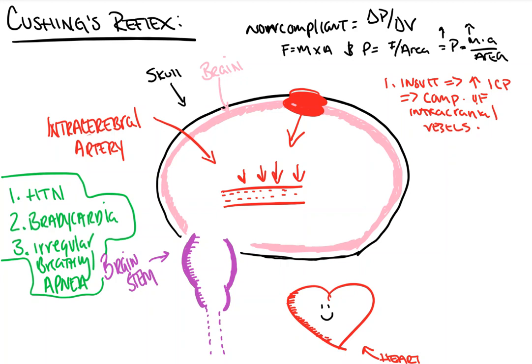Our brain doesn't like that because it needs oxygen, and oxygen comes with the blood. This results in stage one of the Cushing reflex: our sympathetic system kicks in to increase cardiac output. Remember, cardiac output equals heart rate times stroke volume. Our body says we need to get more blood to the brain, so we increase cardiac output via the sympathetic nervous system — speeding up heart rate, increasing stroke volume, and raising pressure to improve circulation up to the brain.